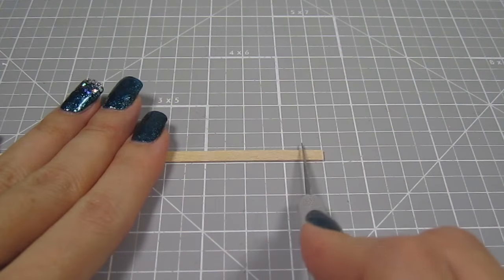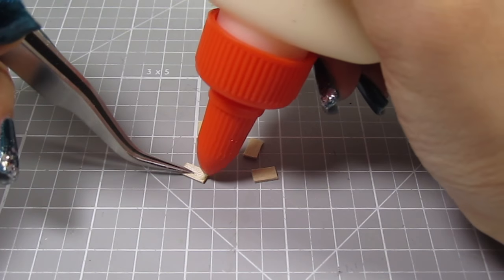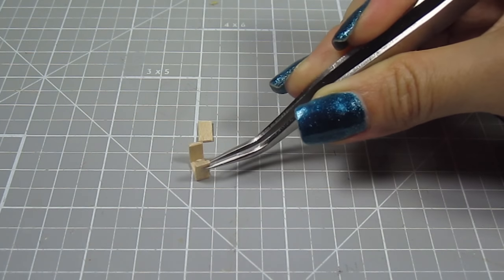I take a coffee stirrer and cut out 4 ¼ inch pieces. Apply glue to the ends of one piece and add on 2 other pieces. Let that dry.